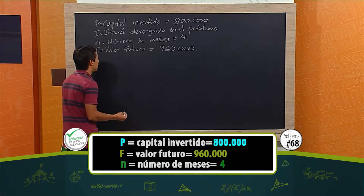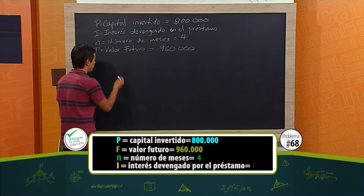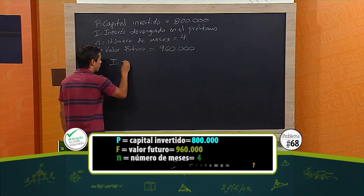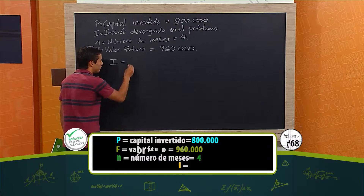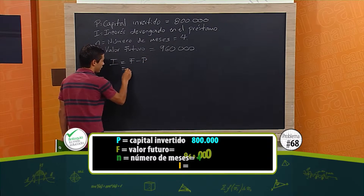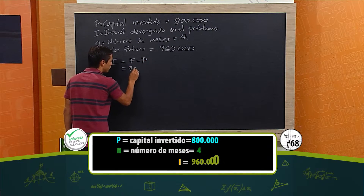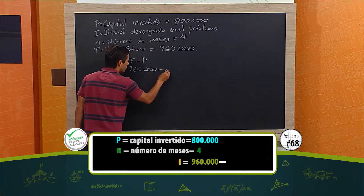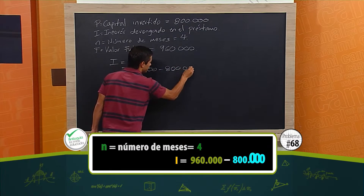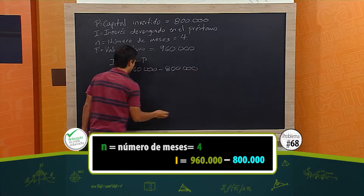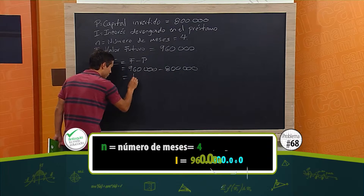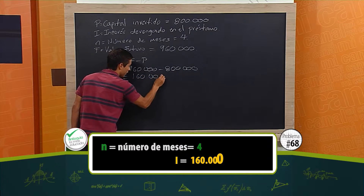Lo que necesitamos es la tasa de interés simple mensual. Primero vamos a calcular I, que es el interés devengado. Entonces, va a ser F menos P, es decir, 960 mil menos 800 mil, que es el capital inicial. Nos va a quedar 960 mil menos 800 mil da 160 mil.